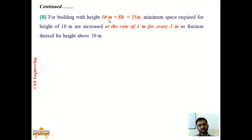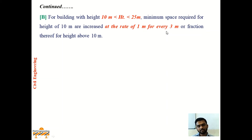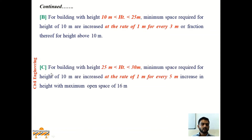For buildings with height 10 meters and less than 25 meters, the minimum space required for height of 10 meters is increased at the rate of 1 meter for every 3 meter increase in height, or fraction thereof, for height above 10 meters. For example, if the height of the building is 16 meters, the margin becomes 3 + 1 + 1 = 5 meters. For buildings with height 25 meters and less than 30 meters, the rate increases at 1 meter for every 5 meters increase in height, with a maximum open space of 16 meters.